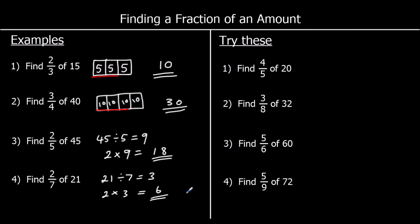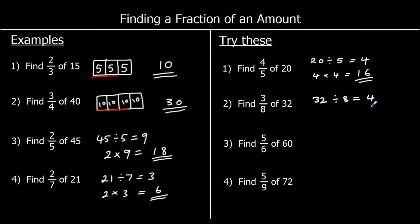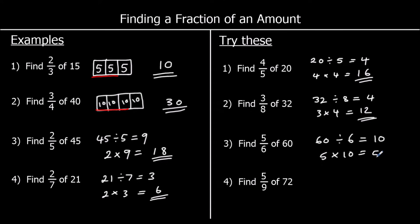Here are four for you to try. For question one, we want four fifths of 20. So we're splitting 20 into five parts — each one's going to be worth four. We want four of the parts, so that is 16. Question two: we're splitting 32 into eight parts, so each part is going to be worth four. 32 divided by eight is four. We want three of the parts, so three fours are 12. Question three: we're splitting 60 into six parts, so each part is going to be worth 10. We want five of them, so that's 50.